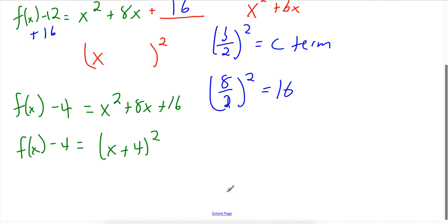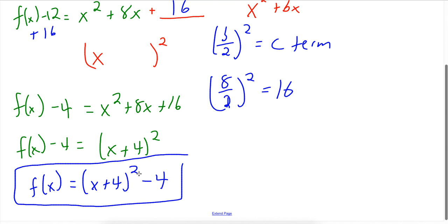The last thing I need to do is I want to have an f(x) function, not just f(x) minus 4. So my final answer here, I'm going to move that 4 back over to get an f(x) equals x plus 4 squared minus 4. Here's my vertex form equation. And here you can see the vertex is negative 4, negative 4. There we go.